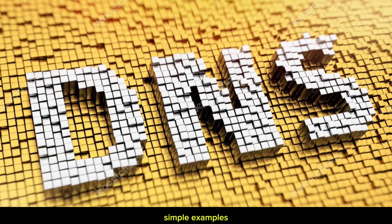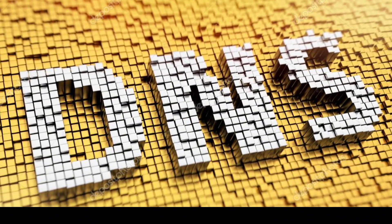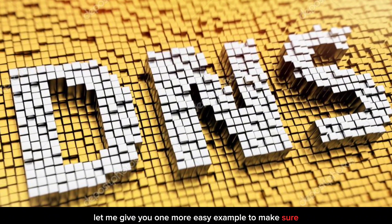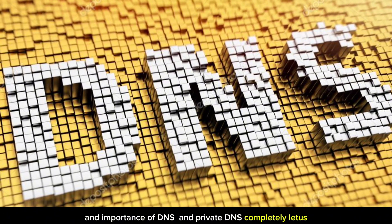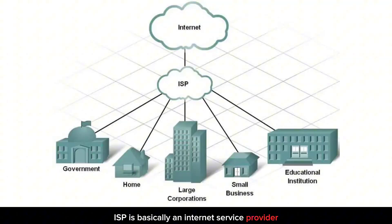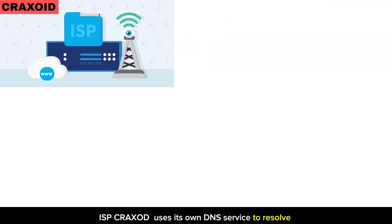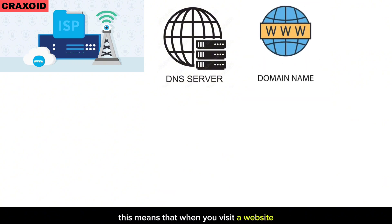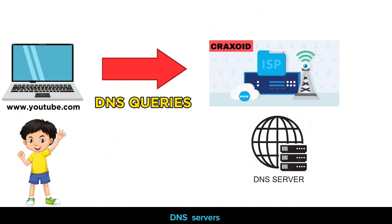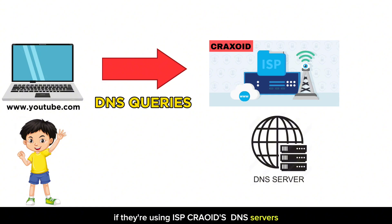Now let's understand how private DNS is so important in our daily life. Suppose you are a customer of ISP CrackZoid — an internet service provider which gives internet to people like us. ISP CrackZoid uses its own DNS servers to resolve domain names. This means that when you visit a website, your DNS queries are sent to ISP CrackZoid's DNS servers. By default, ISP CrackZoid knows which websites its customers are visiting if they are using ISP CrackZoid's DNS servers.